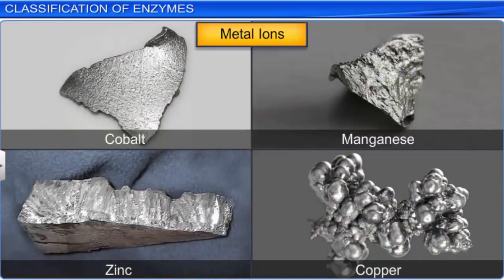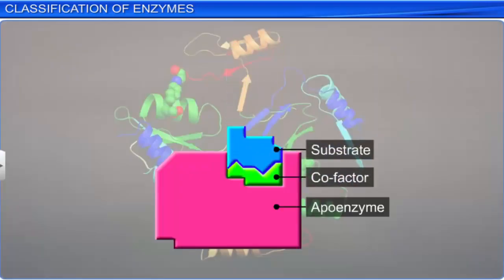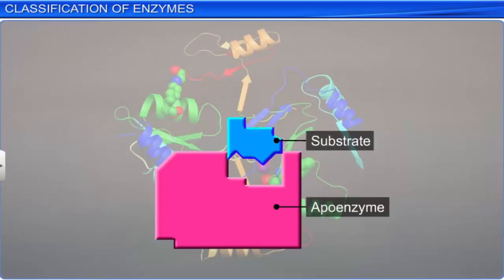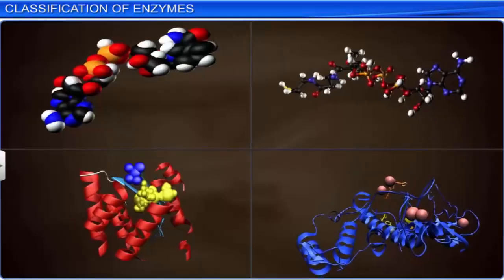A cofactor is very crucial for the catalytic activity of the enzyme. If the cofactor is removed, the enzyme loses its ability to perform catalysis. Therefore, the classification of enzymes provides information about reactions carried out by different enzymes.